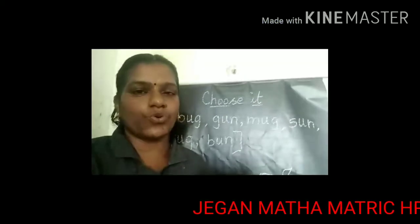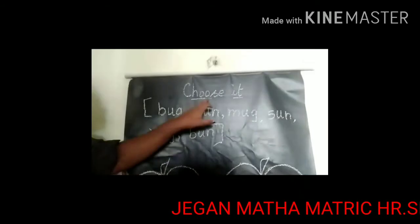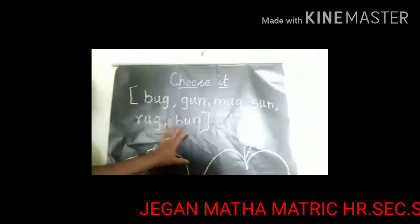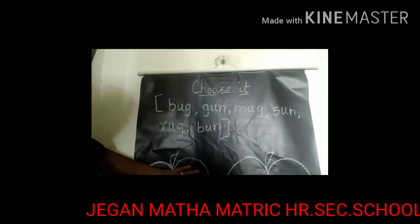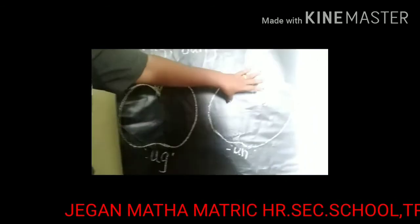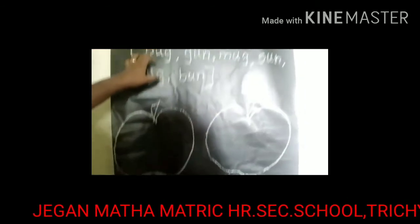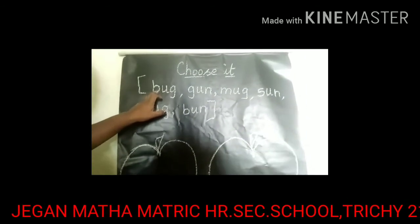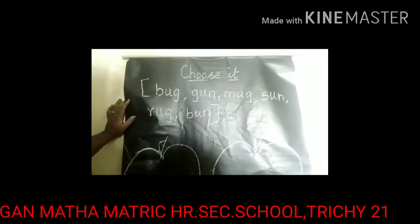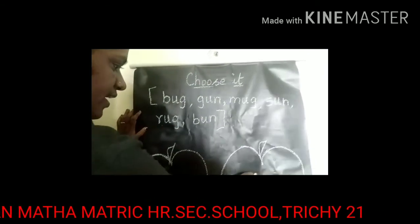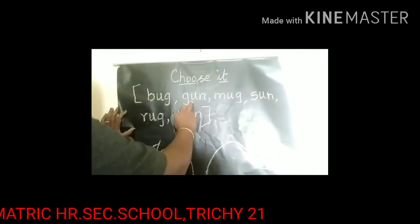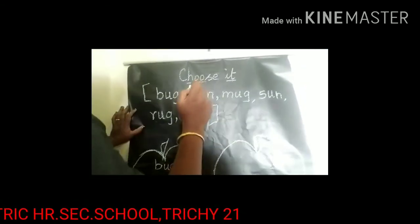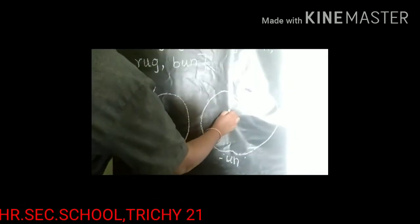We are going to do one activity. Six words are given in the bracket. We are going to write Ug family words in one column and Un family words in the other. Now see the first word: B, U, G — Bug. Where should we write? Yes, we should write it here in the Ug column. Now see the second word: G, U, N — Gun. Which column contains Un family words?